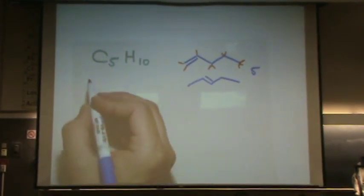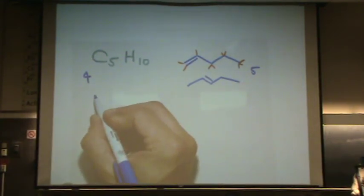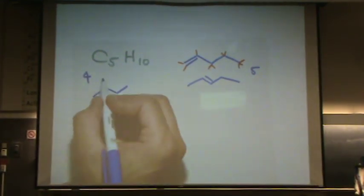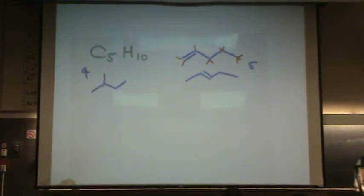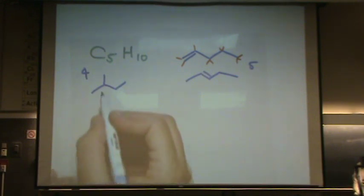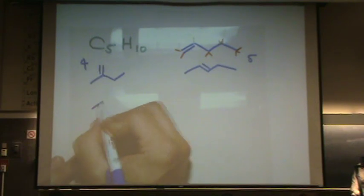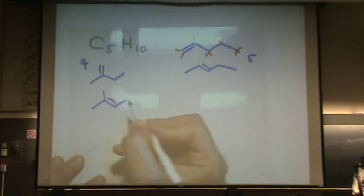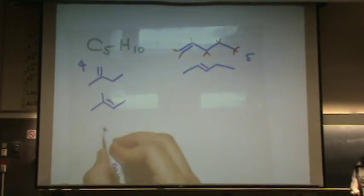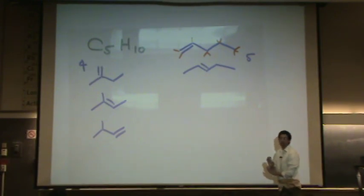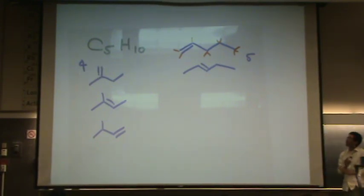Let's try the fours. So now I've got butane with one extra carbon. Now I'm going to figure out where do I put that double bond. I could put it here. I could put it here. There's one other place I can put it. Put it on the other end. I think that's all for the fourth.